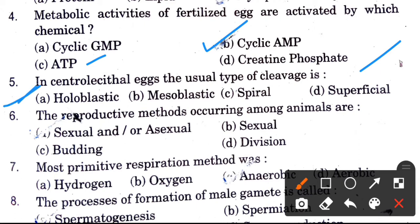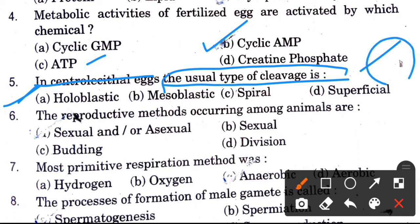Next question: In central lecithal eggs, the usual type of cleavage is? Central lecithal eggs are those where the yolk is present in the center. Options are holoblastic, mesoblastic, spiral, and superficial. The answer is superficial.